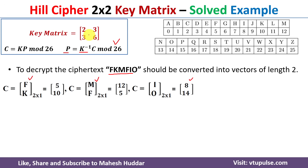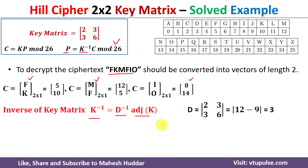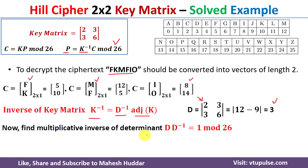The decryption equation requires K-inverse, computed as K-inverse = d-inverse × adjoint(K), where d is the determinant. The key matrix K is [[2, 3], [3, 6]]. The determinant is calculated as 2×6 − 3×3 = 12 − 9 = 3. So the determinant d = 3. Next we need to find d-inverse, the multiplicative inverse of the determinant mod 26.